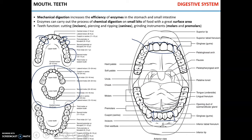Looking at the anatomy of the mouth, you will see some notable elements: the palate, hard in the front and soft in the back; the uvula, which is part of the soft palate; the tongue, which is attached to the floor of the oral cavity by the lingual frenulum; and the lips, attached to the gums by the inferior and superior labial frenulum.